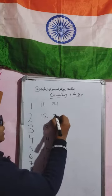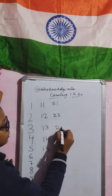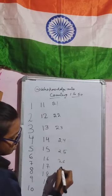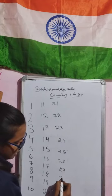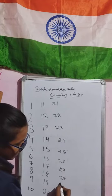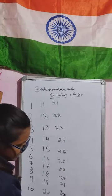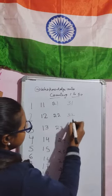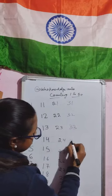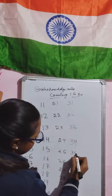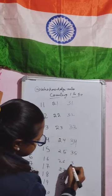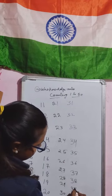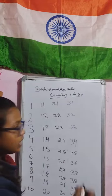21, 22, 23, 24, 25, 26, 27, 28, 29, 30. Now 31, 32, 33, 34, 35, 36, 37, 38, 39, 40.